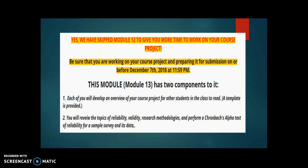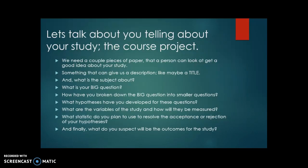The first component: each of you will develop an overview of your course project for other students in the class to read. A template is provided — I don't want you guessing about what to include. In the second part, you will review the topics of reliability, validity, and research methodologies, and perform a Cronbach's alpha test of reliability for a sample survey and its data.